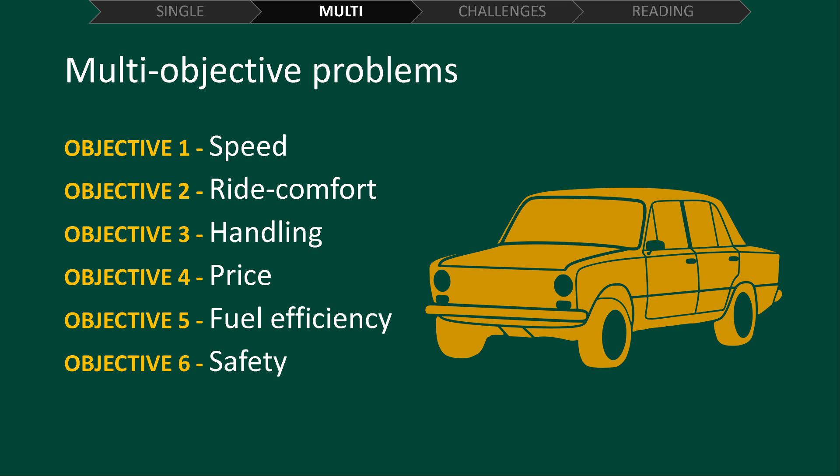So what does this mean for our solutions? Each solution now has six objective values, indicating how well it performs for each of our objectives. This introduces many difficulties, but the most significant difficulty is how we decide when one solution is better than another.